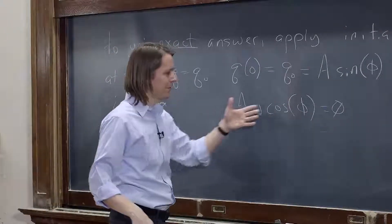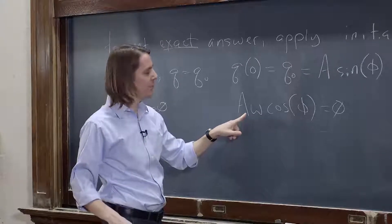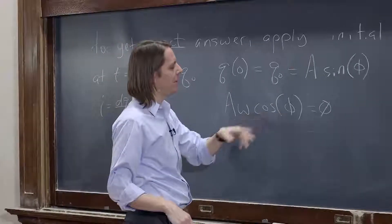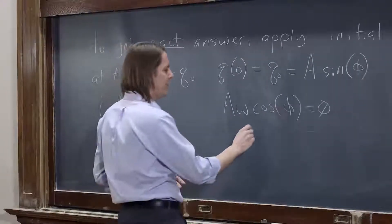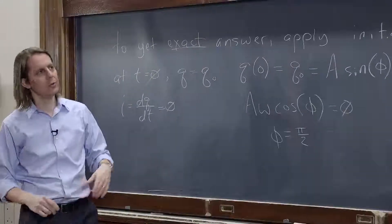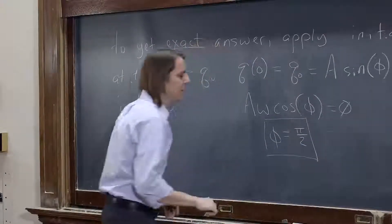So this is the easier one to deal with. Something here has to make this zero. Okay. The amplitude can't be zero. That would be the trivial solution. Frequency can't be zero. That would be the trivial solution. So it must be that the cosine phi term is zero. Well, the only way to make cosine phi zero is to make phi pi over 2. Or 3 pi over 2. Or 5 pi over 2. Let's just make it pi over 2 just to make our lives simpler.